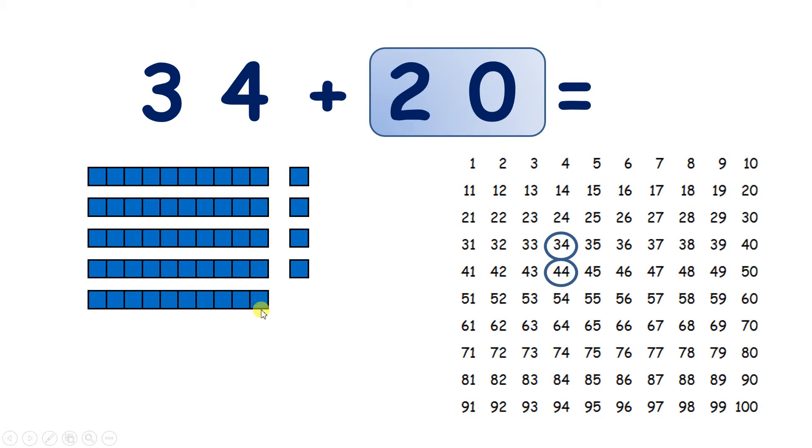And add one more ten, and we have 54. So we've added 20 because we've added two tens. So 34 add 20 is 54.